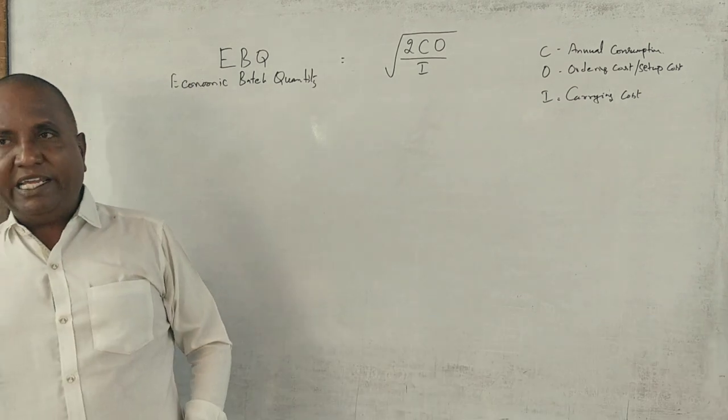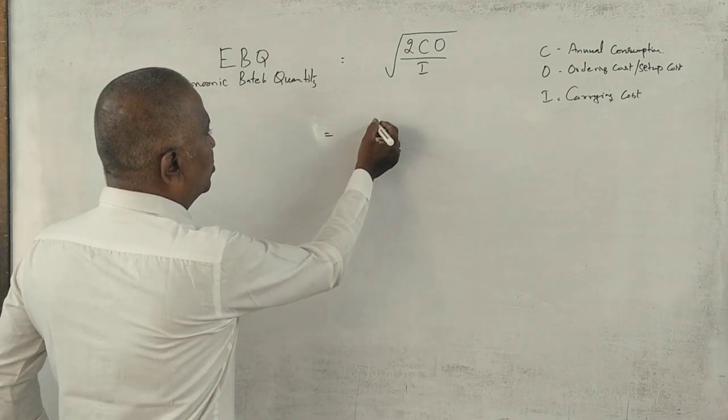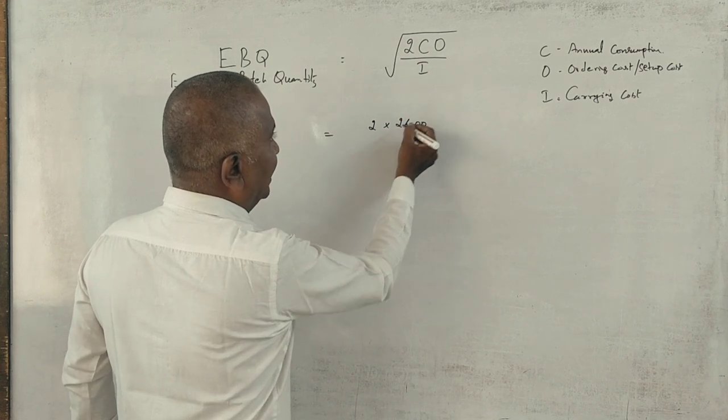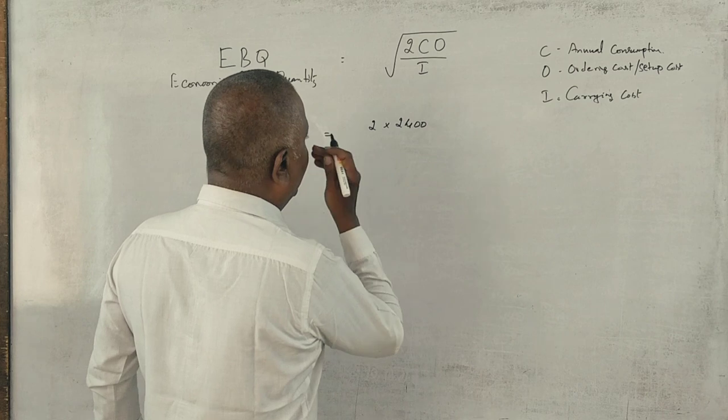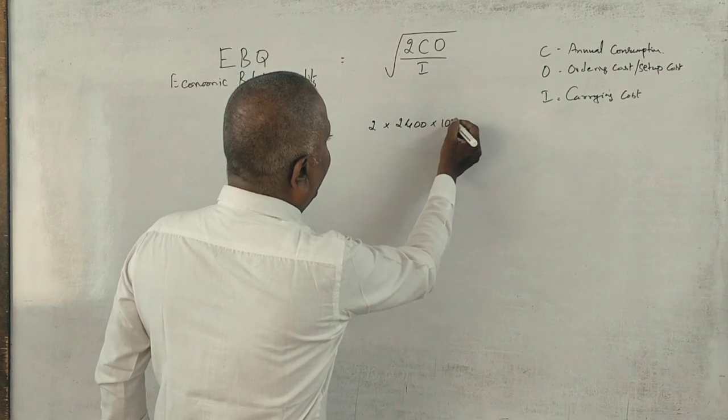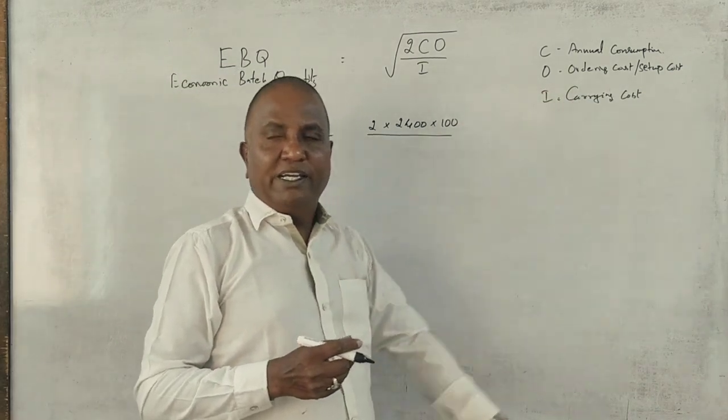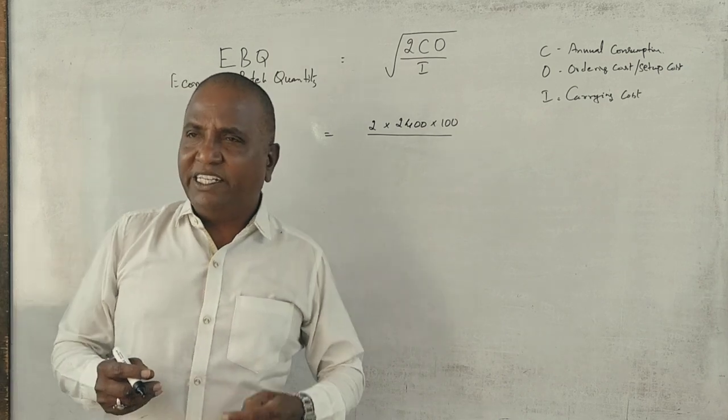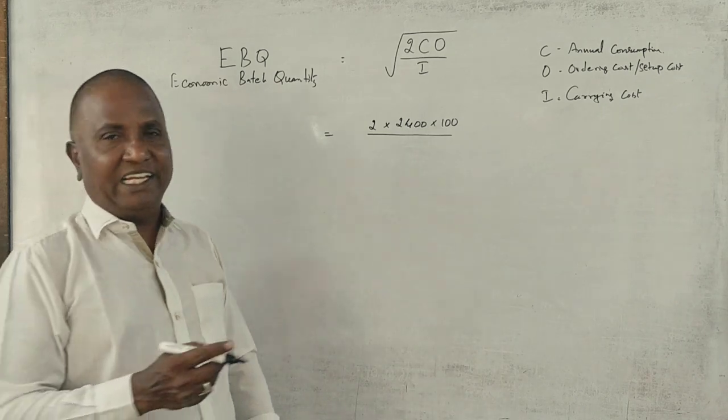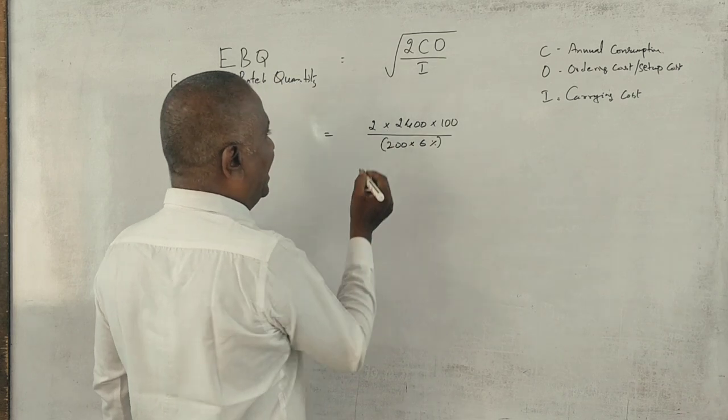Here is the number of batches. Annual consumption is 2400. Ordering cost is Rs. 100. Setup cost is nothing but ordering cost. Carrying cost, the carrying cost is 6% of the cost. 200 manufacturing cost, 6% of the cost, which equals 12.